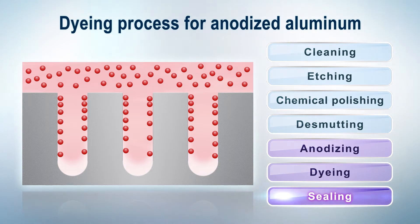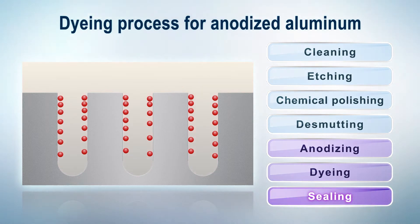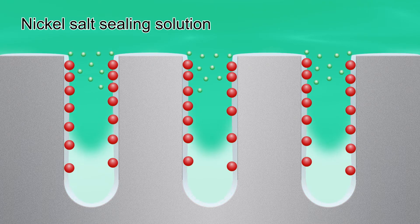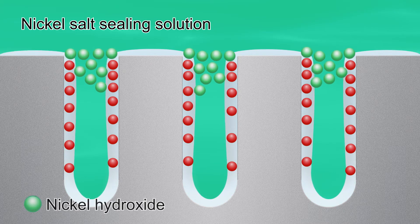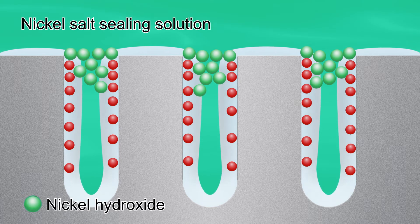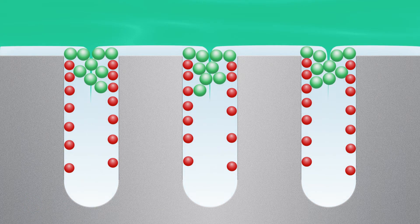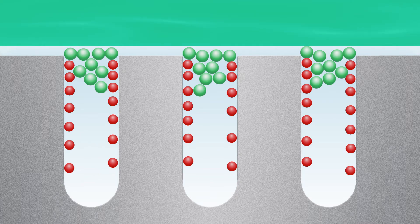The final step is the sealing process. After dyeing, the anodized films are dipped into a sealing solution containing nickel salts. Nickel hydroxide is deposited around the entrances of the micropores, sealing the pores shut. This reaction also prevents the dyes from escaping and improves corrosion resistance.